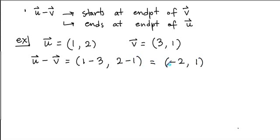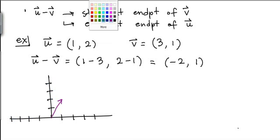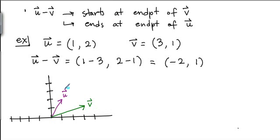And if I want to draw this, u is going like this. That's v, this was u. So I want to start this vector where v ends and I want to end it where u ends. So where does v end? Right here. Where does u end? Right there. So the resulting vector, the subtraction, is going to go in this direction. That is u minus v.